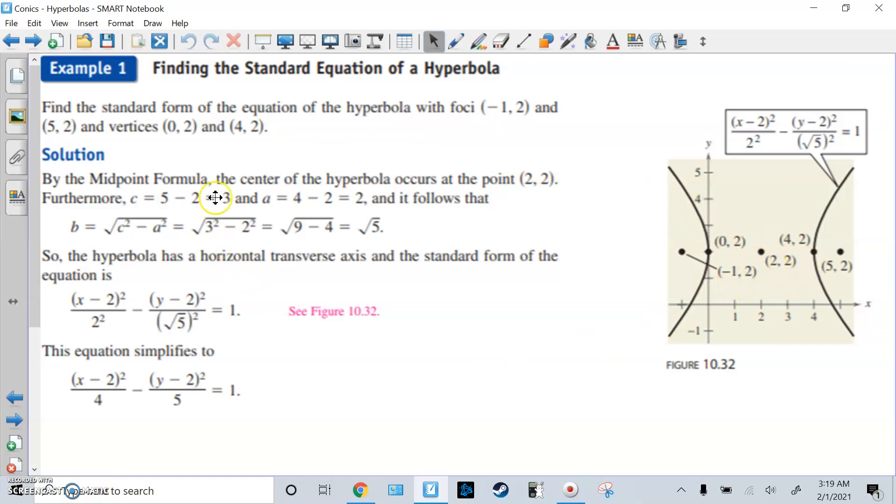Then we need to find C and A. Remember, C is the distance from the focus to the center. How far is from -1 to 2? It's three spots. Or 5 to 2 is three spots. A is the distance from the center to the vertex. How far is from 4 to 2? It's just 2. Once you have A and C, you can do the formula to find B. B equals the square root of C squared minus A squared. Fill it in, simplify, you get the square root of 5.